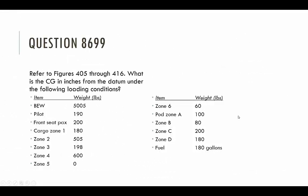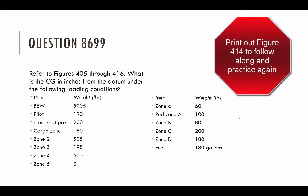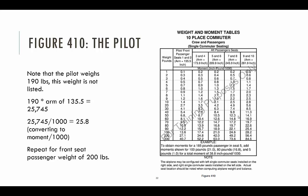Question 8699 is essentially the same process but with more items: a front seat passenger, cargo in zones 1 through 6, and cargo in the pod. This time the pilot weighs 190 pounds, which is not listed in the table. Instead, we're given an arm of 135.5 inches for the pilot's seat position.